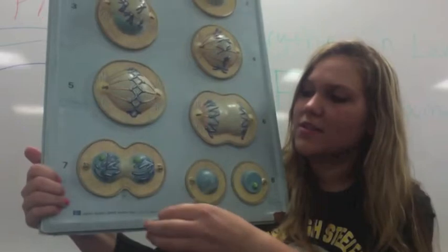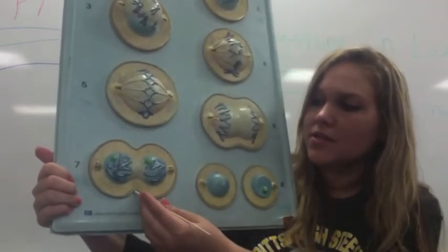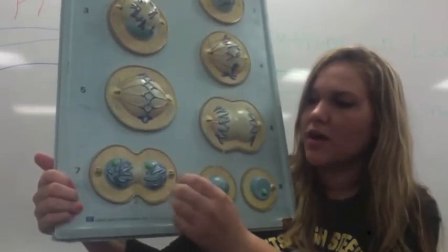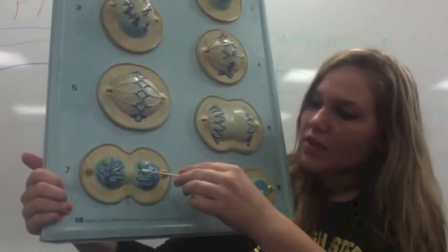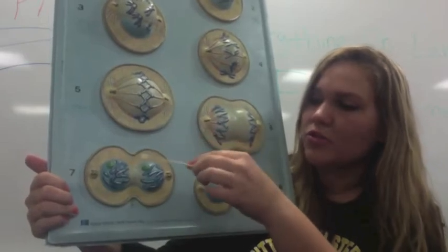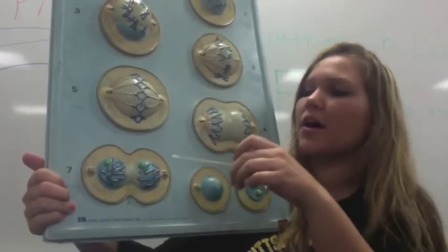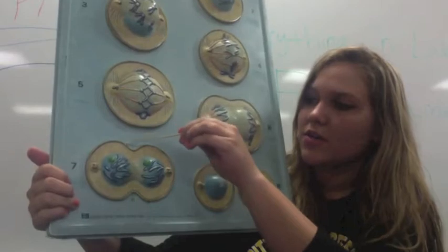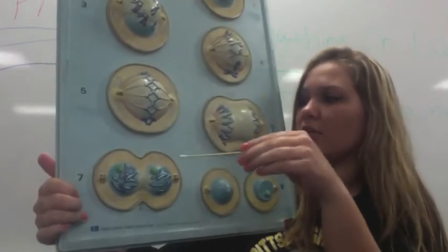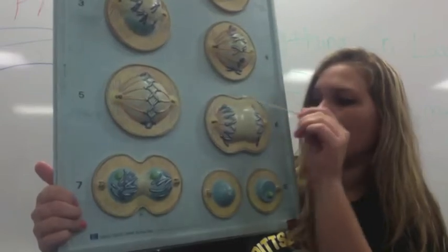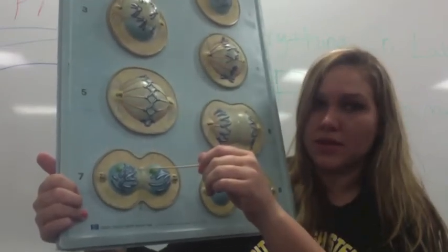And the second-to-last phase is called telophase, and telophase is where the cell is actually starting to divide into two other cells. And the trademark of a telophase cell is this right here. It's called the cleavage furrow. So that's how you can really tell the difference between anaphase and telophase because some people get that confused.